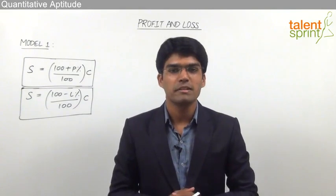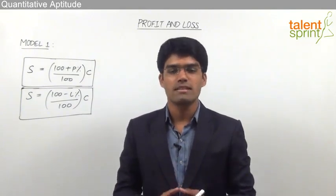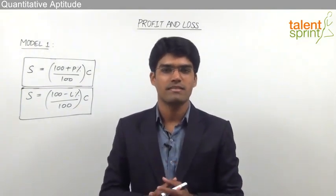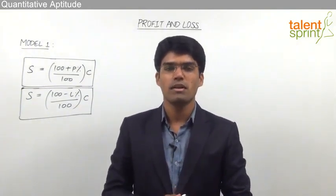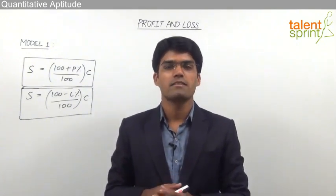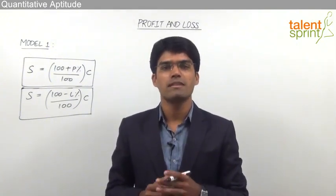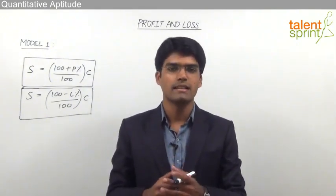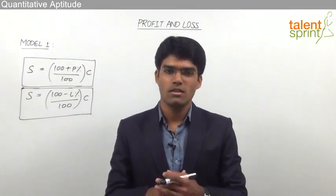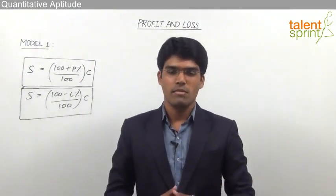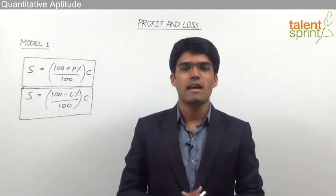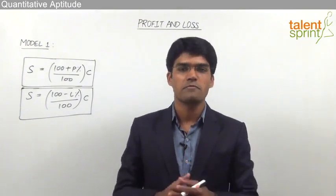After understanding how to calculate profit and loss, and profit percentage and loss percentage, let us now go for the first model from this topic, where we are supposed to find out the selling price or cost price of the article when the profit percentage or the loss percentage is given to us. Before we take up any example, let us first have a look at the required formulae.